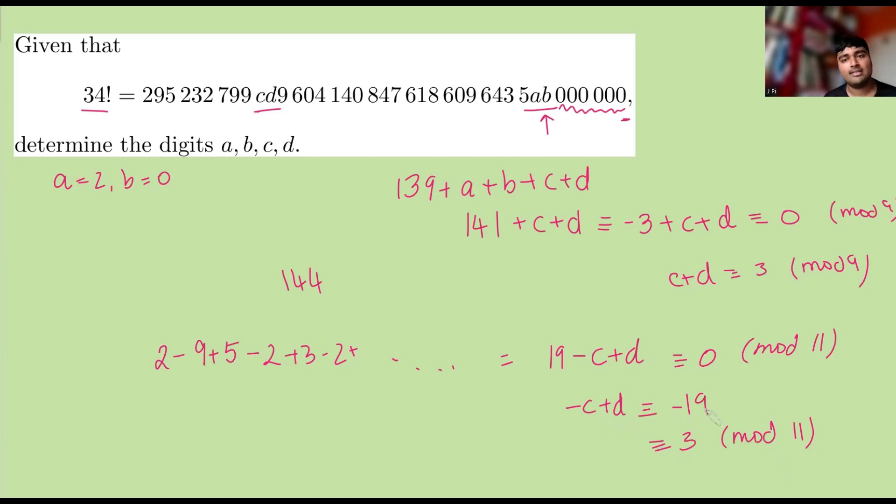And remember, C and D are digits, so they're between 0 and 9. So we can kind of just spot here that C is 0 and D is 3. So therefore, C is 0 and D is 3.